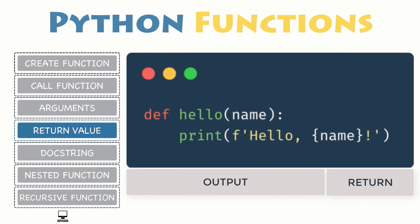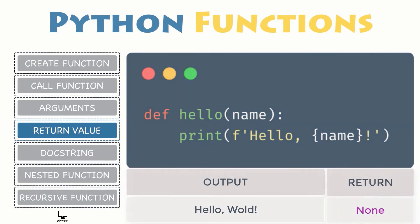In this example, none is returned, since hello directly prints the name passed as argument, but no return statement is used.